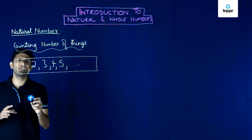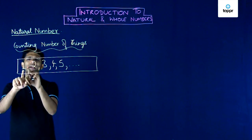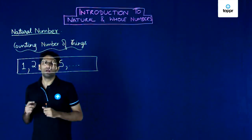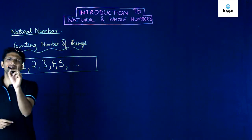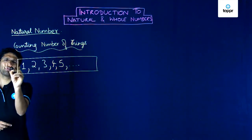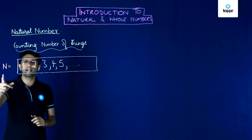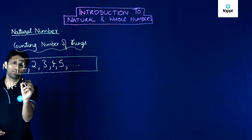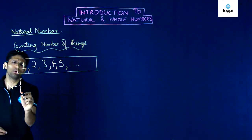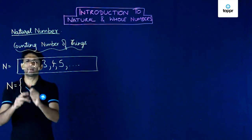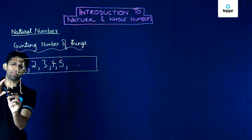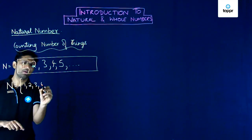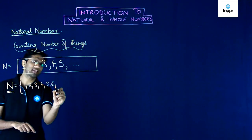The list of natural numbers can be written as 1, 2, 3, 4, 5 and so on. Note that this list is represented by capital letter N. So if you want to represent natural numbers, we write capital letter N. Natural numbers denoted by N can be 1, 2, 3, 4, 5, 6 and so on.